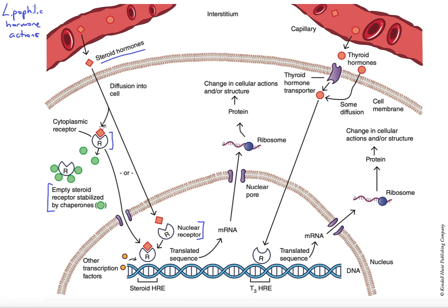Once the hormone binds to the binding site on that receptor, the chaperones dissociate, and then the receptor can actually diffuse into — or the receptor could actually be in the nucleus already. But once we're bound, we have what's called a hormone-receptor complex, the two stuck together.